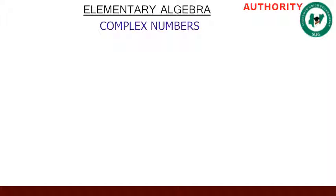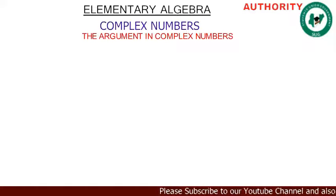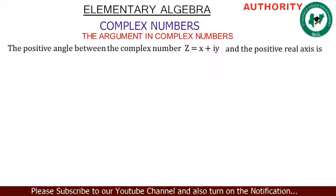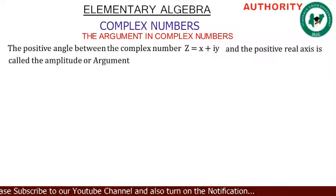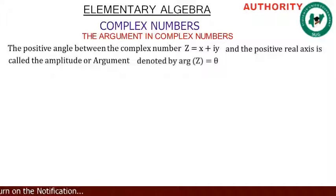Welcome again. Today we are still treating complex numbers, and on that complex number let's treat the argument in complex number. We say that the positive angle between the complex number z = x + iy and the positive real axis is called the amplitude or argument. It is usually denoted by arg(z) = θ.